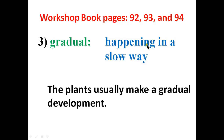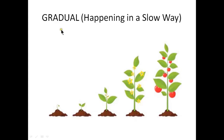Our next word is 'gradual.' Gradual means something that is happening in a slow way and not rapidly or quickly. Here is your sentence: the plants usually make a gradual development. When you plant any sapling, it will turn into an adult plant after two or three months — maybe it will take a year. The change from a sapling into an adult plant is a gradual process; it will take a significant period of time.